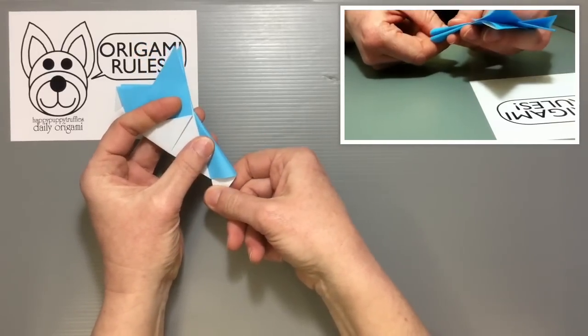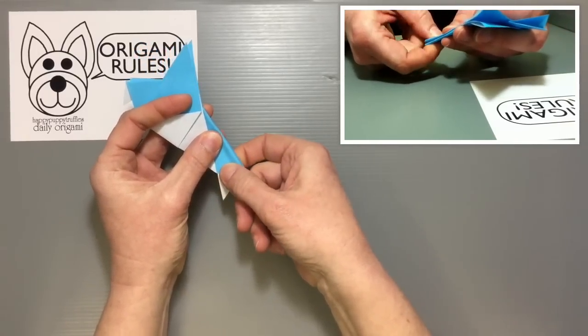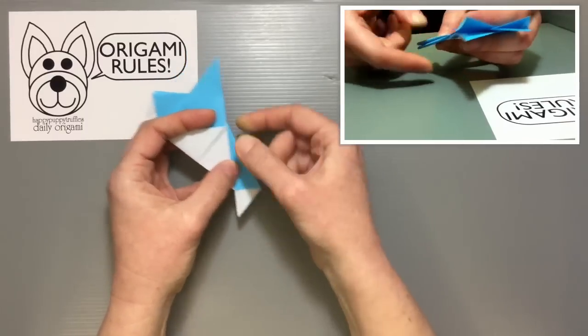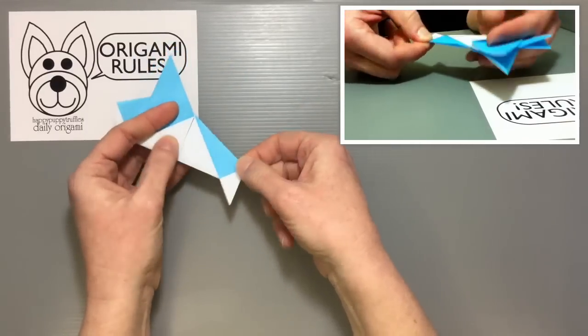So I'm just going to pull on it until it lines up so that it comes out right in even succession from there. Put a nice crease there. And that should give you the finished origami traditional dove.